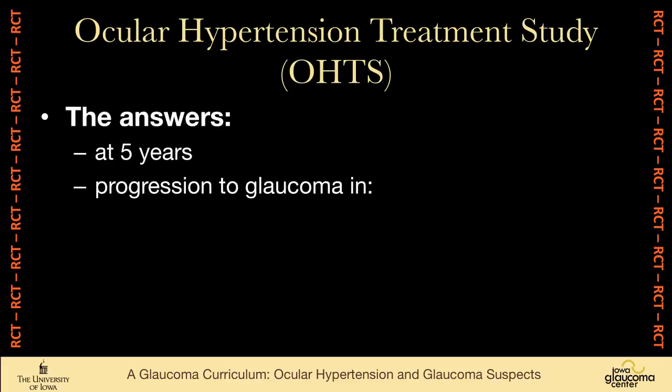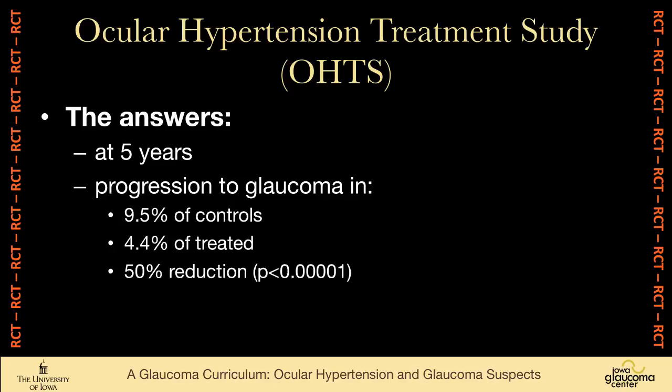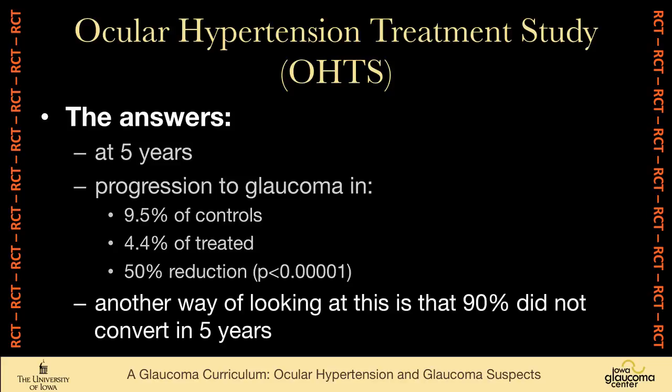The answer is that at five years, there was progression from ocular hypertension to glaucoma in 9.5% of controls versus 4.4% of treated — roughly twice as many. That's a 50% reduction in the number of people who went from ocular hypertension to glaucoma, which was very statistically significant. But another way of looking at this is that 90% of patients with ocular hypertension did not convert in five years.